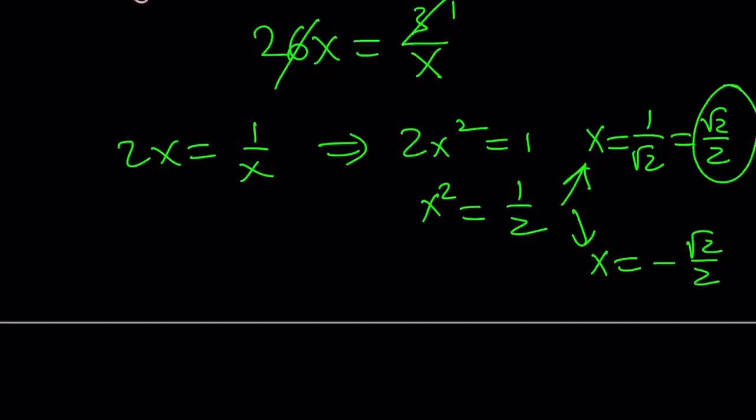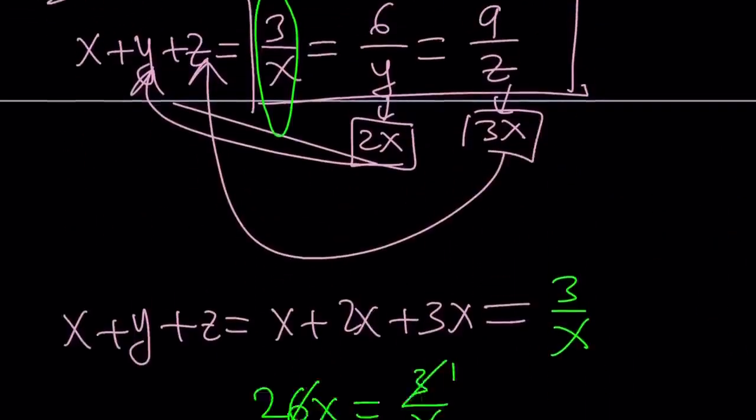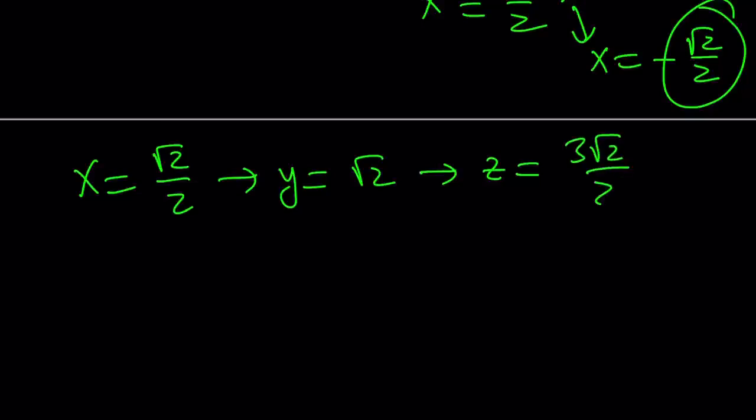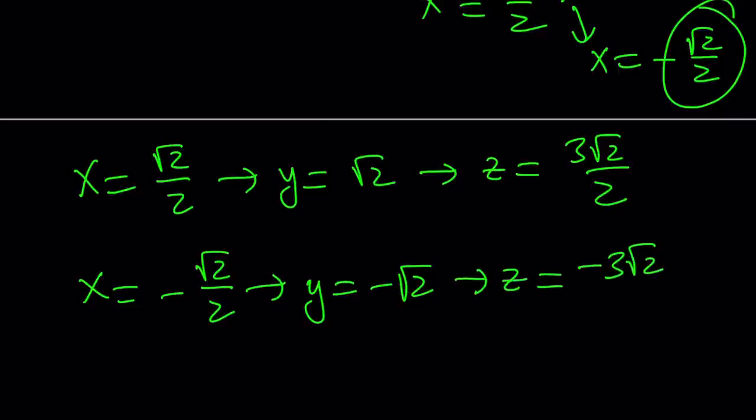And since we know the x values, we can find the y values, because we know that y is 2x and z is 3x. So if x is equal to root 2 over 2, then y is going to be 2 times that, which is root 2, and z is going to be 3 times x, which is 3 root 2 over 2. So that's going to give you one ordered triple. And if x is negative square root of 2 over 2, then y is going to be negative square root of 2, and z is going to be negative 3 root 2 over 2.